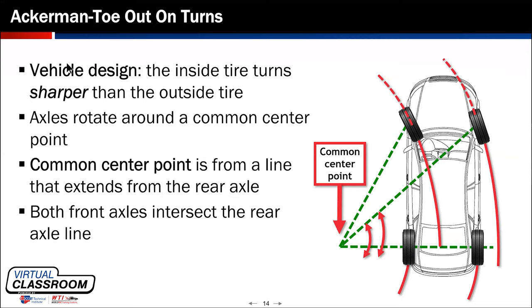The idea behind the Ackerman principle is this: when a vehicle is turning around a corner, the tires tend to follow a different arc — the circle is bigger on the outside than on the inside. It takes less turning to follow a larger arc than a smaller arc. So if both tires turned at the same degree going around a corner, the outside tire would be trying to turn around the arc of the inside tire. That causes tire squealing, tire wear, feathering, and some really weird handling problems if the Ackerman principle or toe-out on turns is not implemented correctly.